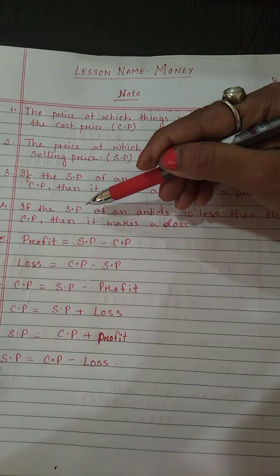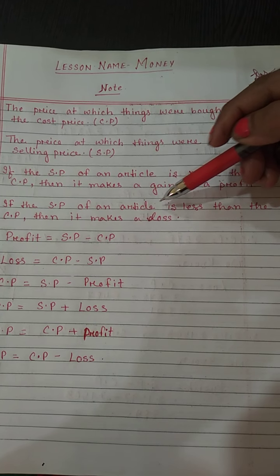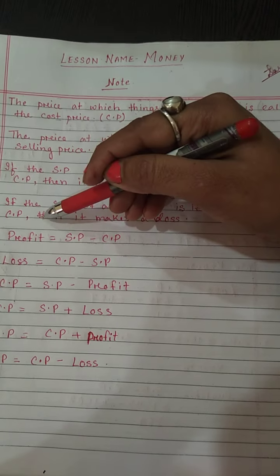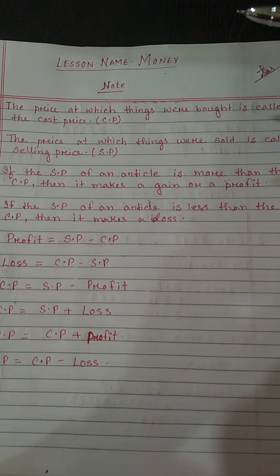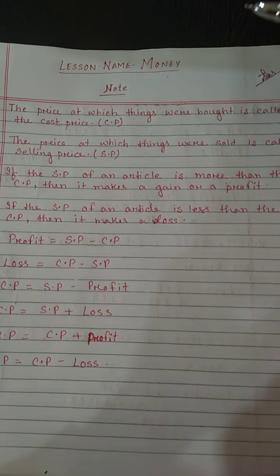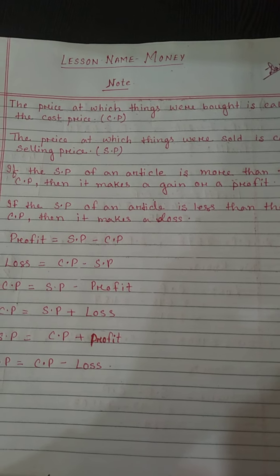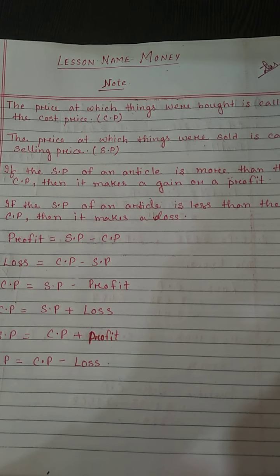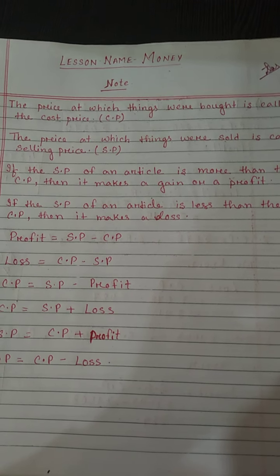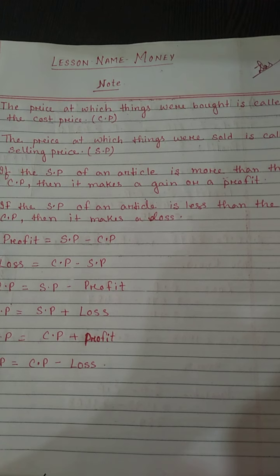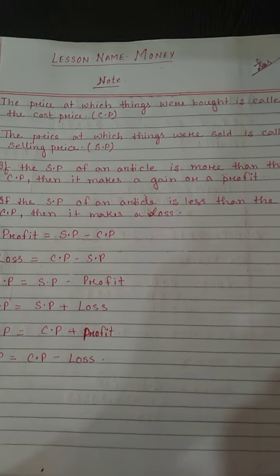Number four point: if the SP, that is the selling price of an article or item, is less than the cost price — suppose you bought one chocolate and each chocolate costs rupees five, but you sold it to your customer at rupees four — that means you have done a loss of rupees one.